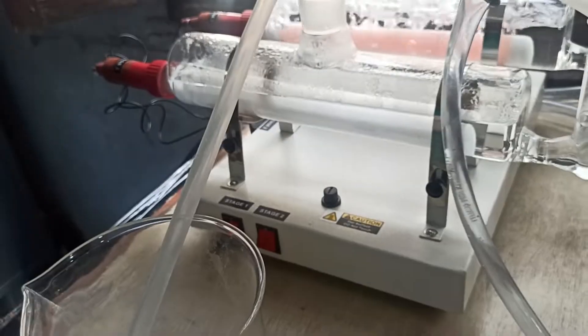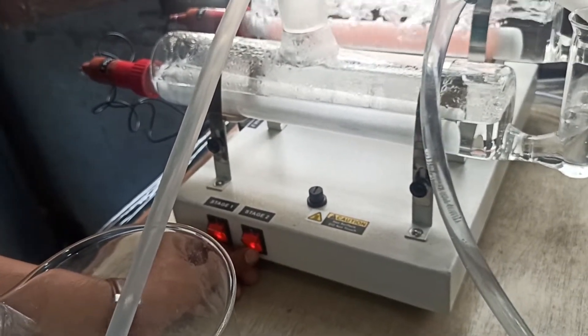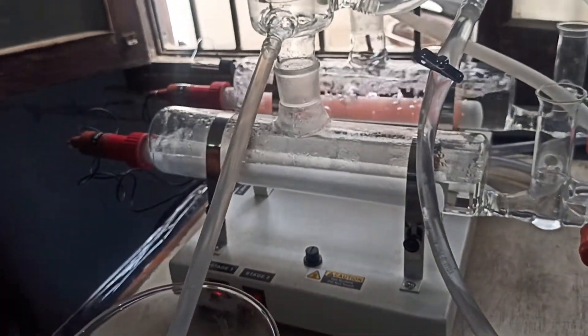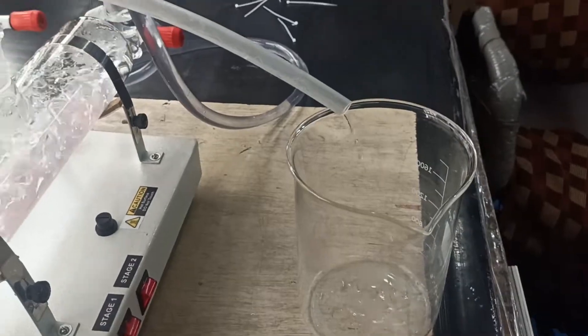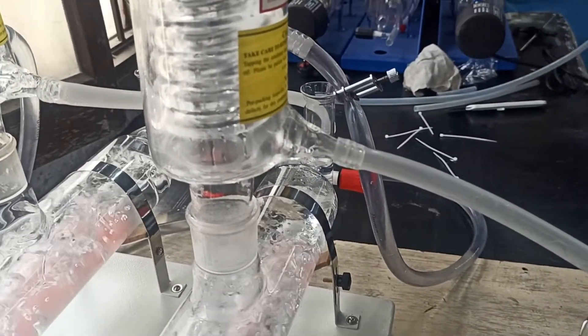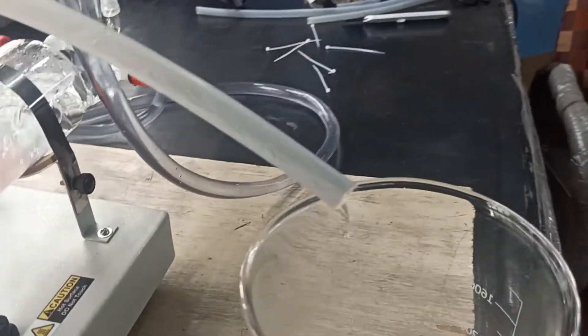Now, you can switch on the second stage power supply by pressing the stage 2 on-off switch. After some time, the double distilled water output starts coming from the second stage.